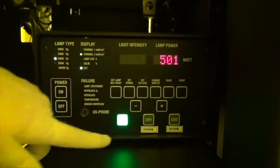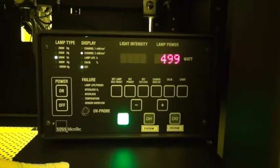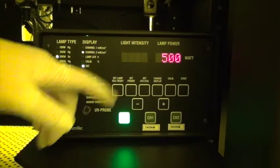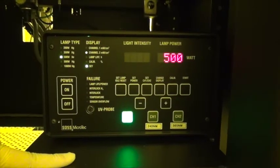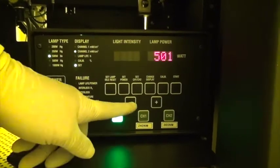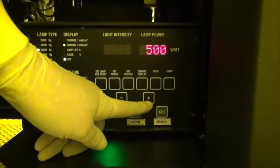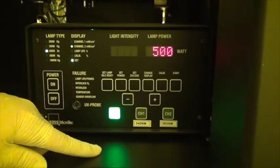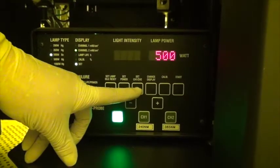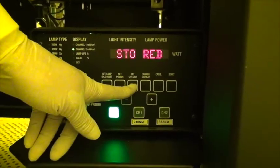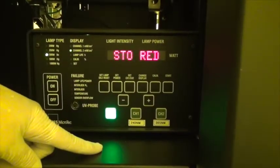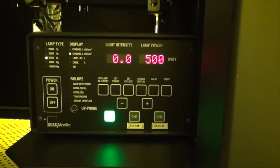Press and hold until the display changes. This now shows the set point for the constant intensity mode. And if we want to change it we simply use the plus and minus buttons here to change it. Once the correct intensity has been set, press and hold again. And now the value is stored.